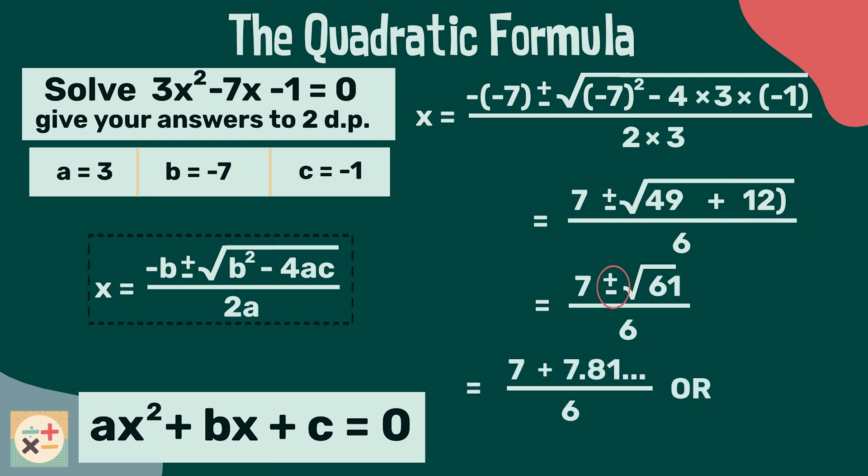Now we simplify further and perform the two calculations. The square root of 61 is a decimal number. In our workings out we have only written part of the decimal, however, when using a calculator, it is best not to round any numbers until the very end to ensure accuracy.